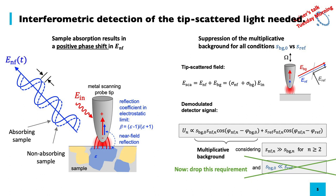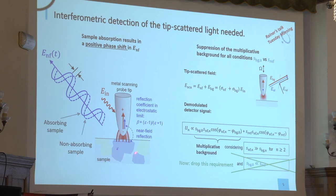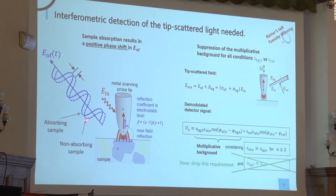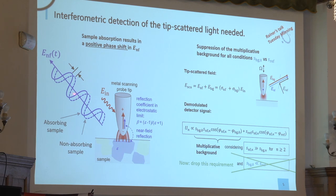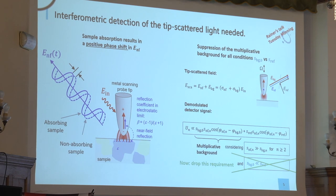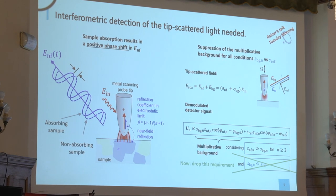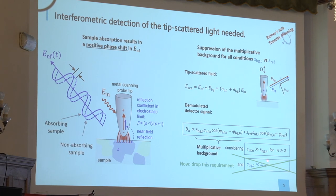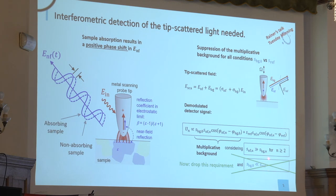Another ingredient is that we have to use interferometric detection. One reason is that if we have absorption in our sample, the scattered near-field is actually phase-shifted with respect to the incident beam. Photodetectors are insensitive to the phase because we detect intensity, so we need to use interferometry. Another reason is that we have to suppress the multiplicative background. As Ryan already told you, you can get away with this as long as your reference beam is much stronger than your background field.